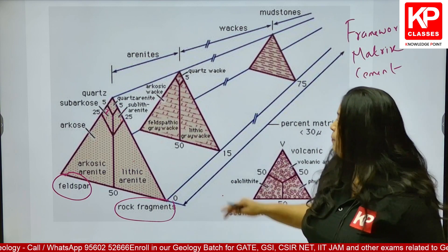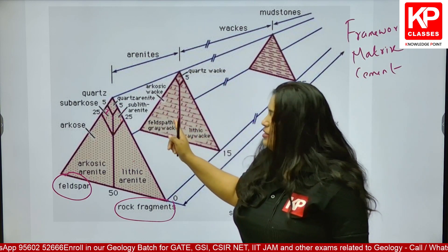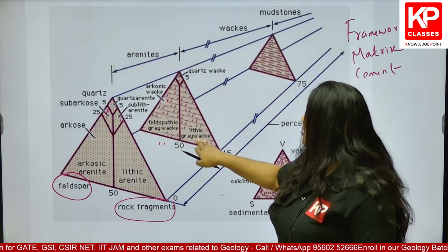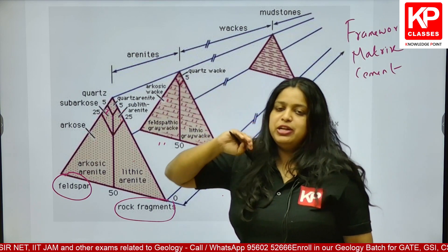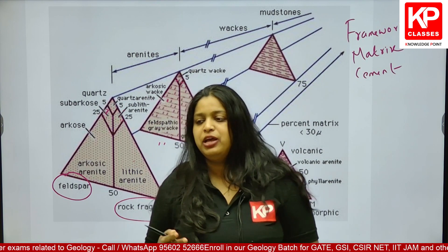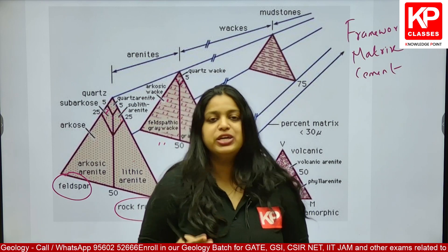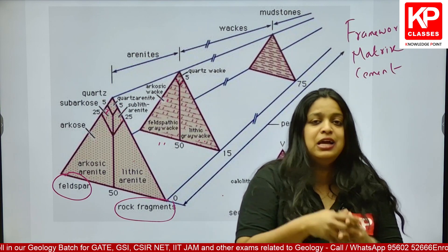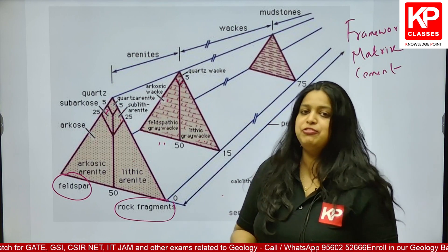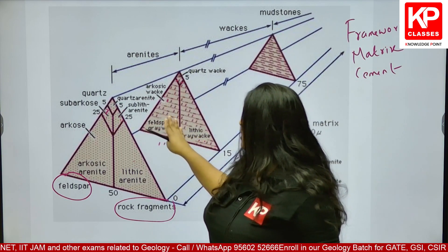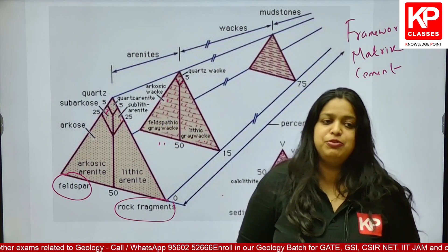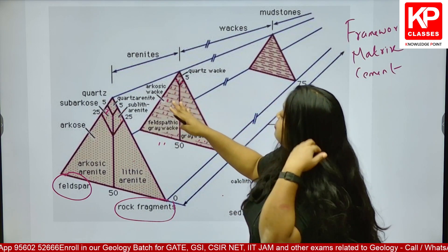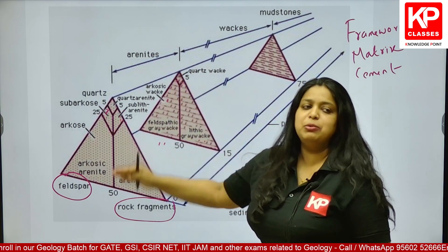When it comes to wackes, there are only three classification terms. If the framework grains are made up of feldspar or rock fragment, we call them greywackes. Greywackes have more than 15% matrix content. If more than 50% of the framework grain is feldspar, we call it feldspathic greywacke. If more than 50% of the grains are rock fragment, we call it lithic greywacke. If more than 95% of the framework grain is quartz, we call it quartz wacke.